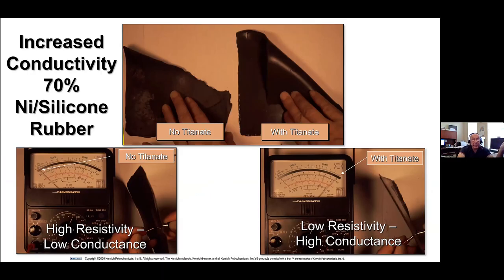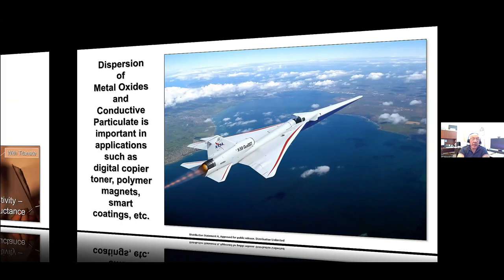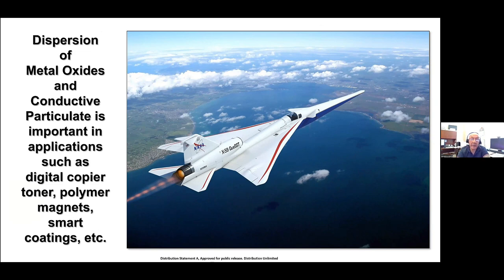If you take conductivity as a key factor in batteries, for example — we take nickel powder and silicone rubber and with just one-third of one percent of the coupling agent by weight of the nickel, we drop the resistivity significantly. You can see the ammeter on the left with no titanate has high resistivity and low conductance, and on the right the needle drops all the way to high conductance. This goes into metal oxides, digital copier toner, polymer magnets, and smart coatings — it's even being used on an experimental hypersonic airplane for reasons I can't disclose.